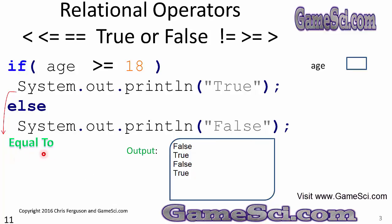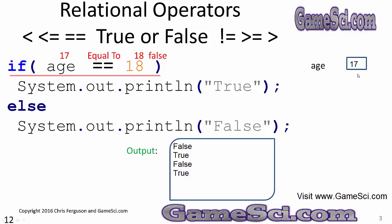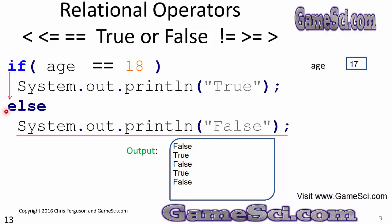Let's look at the equal-equal operator — that's two equal signs right next to each other — and see how the code behaves with that relational operator. Here we set 17 in the variable age. I'm changing these variable values to show you the dynamic nature of this code. Every time it executes, it can choose a different path. So 17 equal-equal 18 is clearly false, and as a false value it's going to select the else path, execute the print line of false, and false shows up on the output.